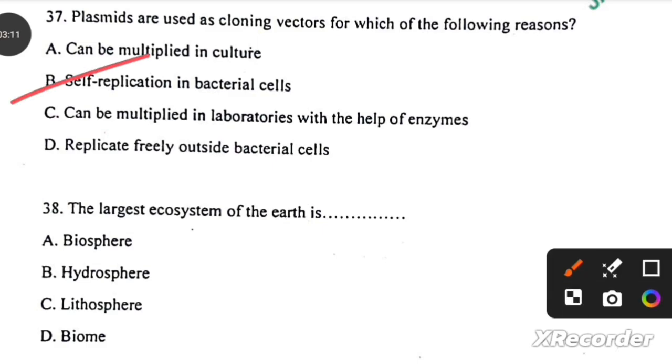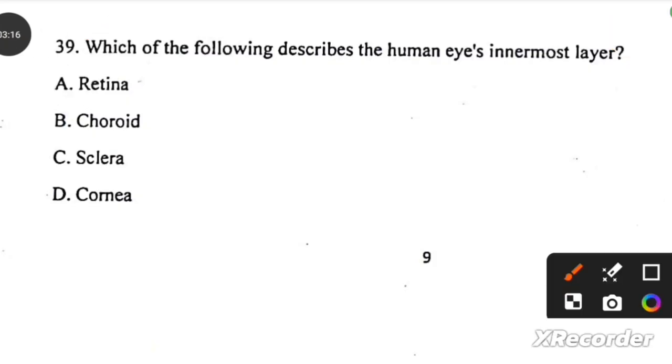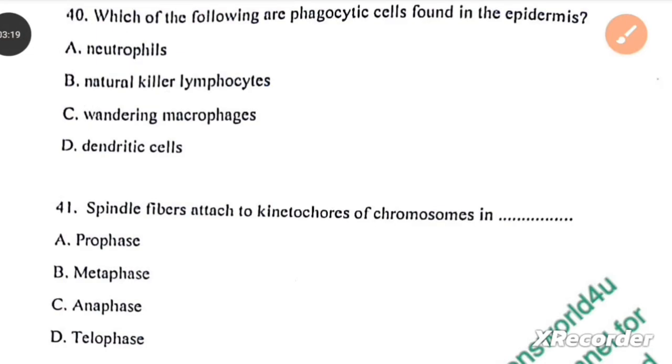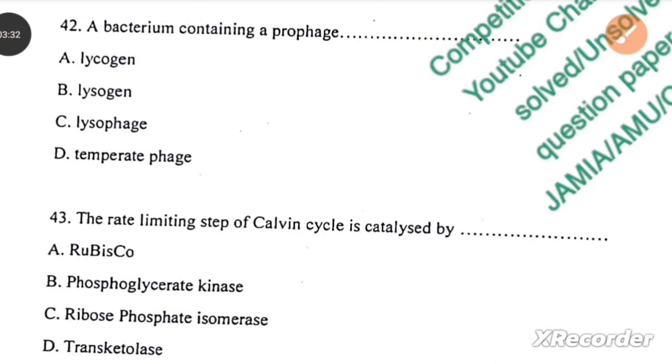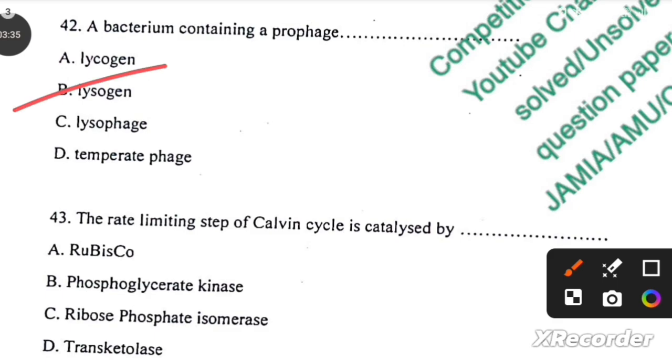The largest ecosystem of the earth is biosphere. Which of the following describes the human eye's innermost layer? Retina. Which of the following are the phagocytic cells found in epidermis? Neutrophils. Spindle fibers attached to the kinetochores of chromosomes in metaphase. A bacterium containing a prophage is lysogen.